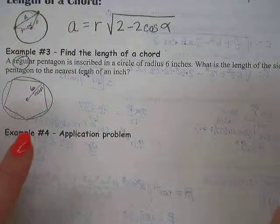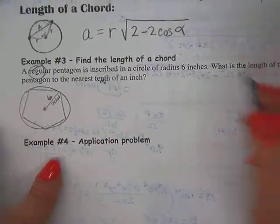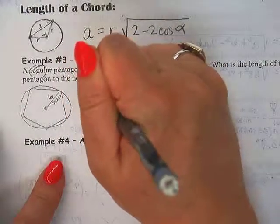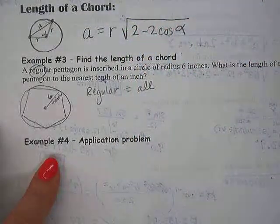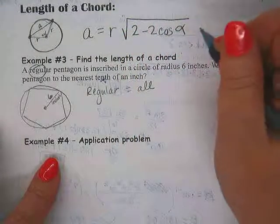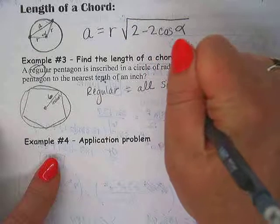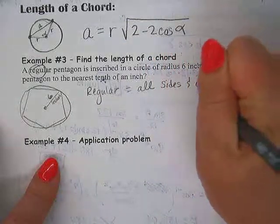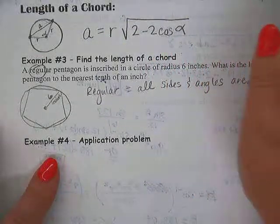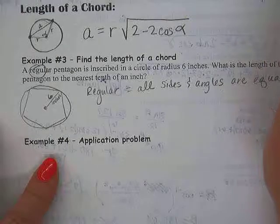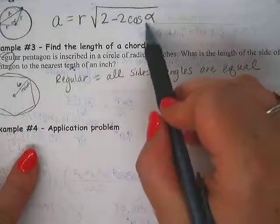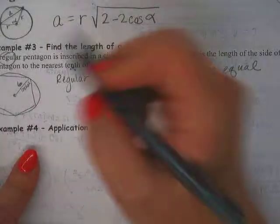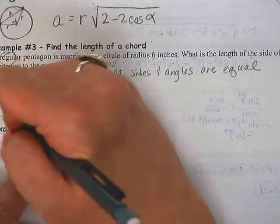Okay, so if it's a regular pentagon, do you remember what that means? Yeah, regular pentagon means all of the sides are the same length. It also means all of the angles are equal as well. So all sides and angles are equal, because they didn't give us an important piece of information in this problem. What did they not give us that we need to plug in right here? The angle.